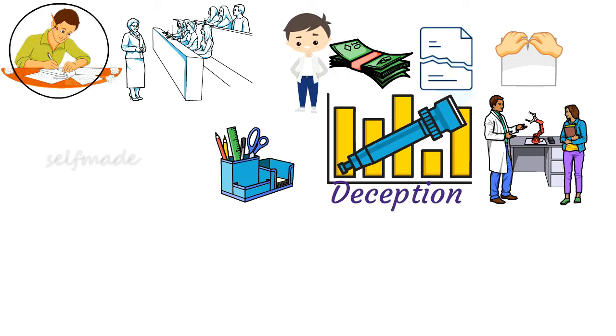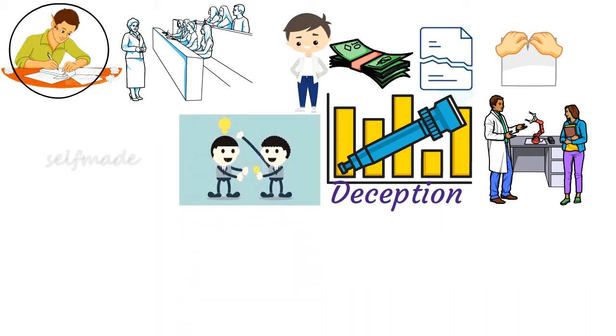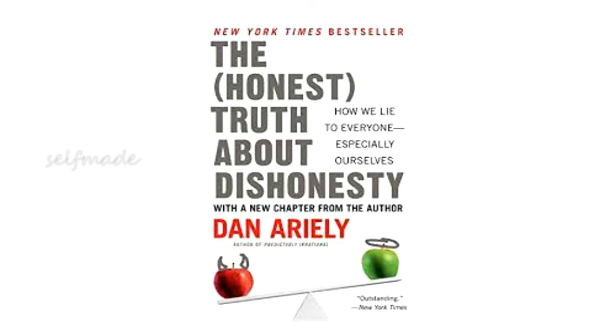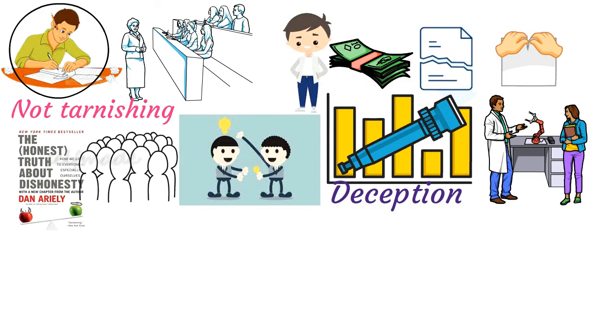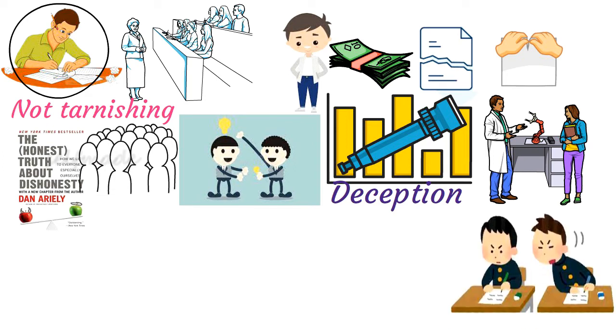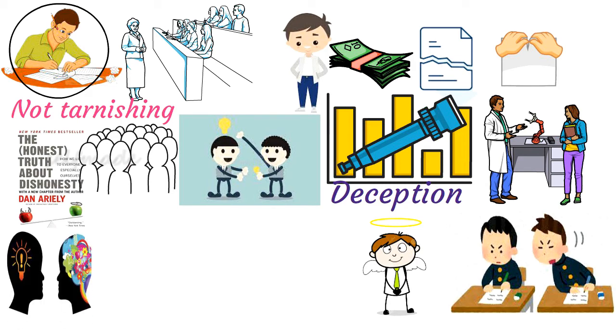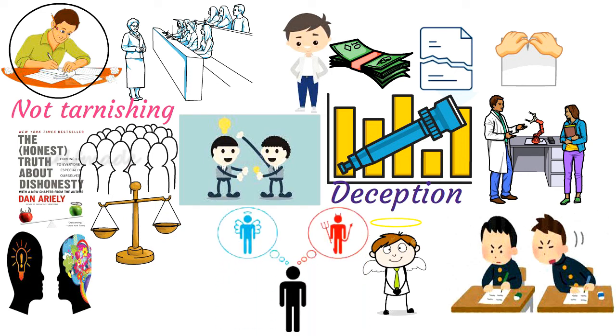This is what the author found in doing various experiments: no one wants to be deceived at a bigger level. Humans are serious about not tarnishing their image. Throughout this book, the author has compiled the results of many such interesting studies. All human beings want the benefits of cheating, but their image as a good person should not spoil at any level. Having both perceptions in mind, when we cheat a little, we are able to balance. The author says that many people have a troubled conscience when they cheat too much.